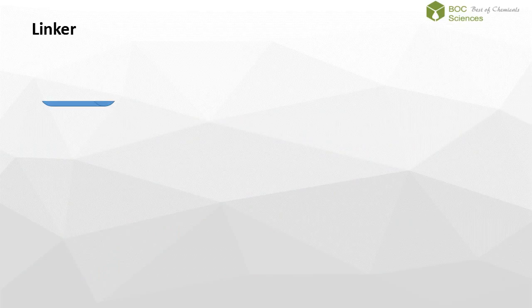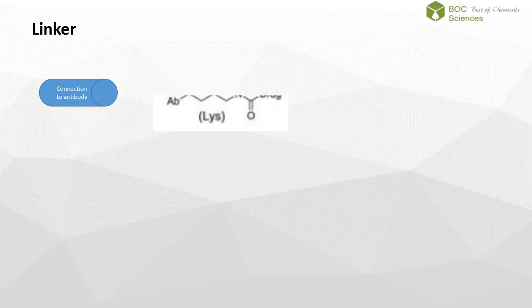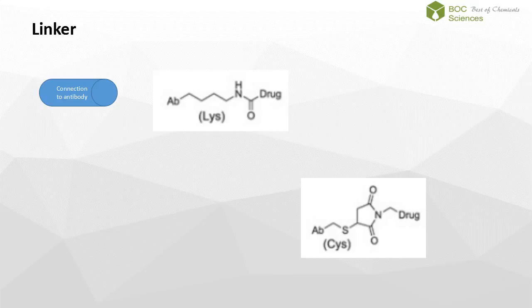The two most common naturally occurring amino acids used to attach the linker-drug to the antibody are cysteines and lysines. Attachment chemistry is limited to those reactions that are either selective for a primary thiol or a primary amine, unless unnatural amino acids are incorporated into the antibody.